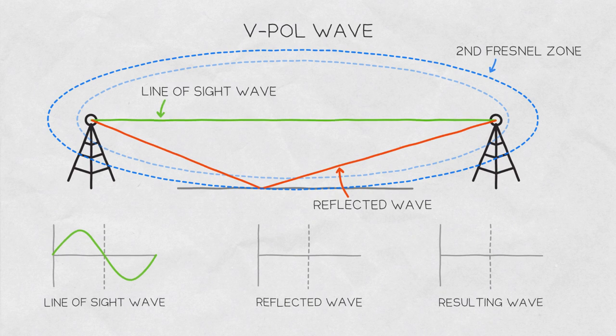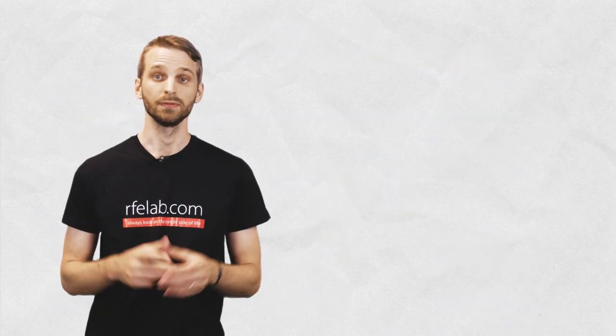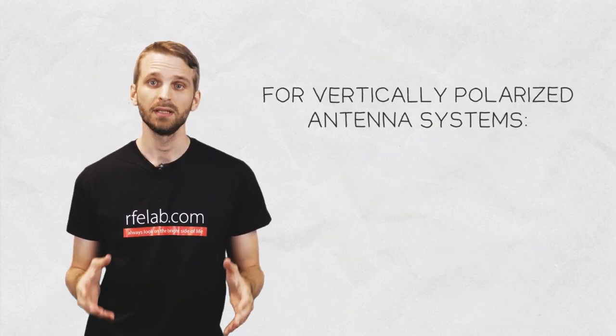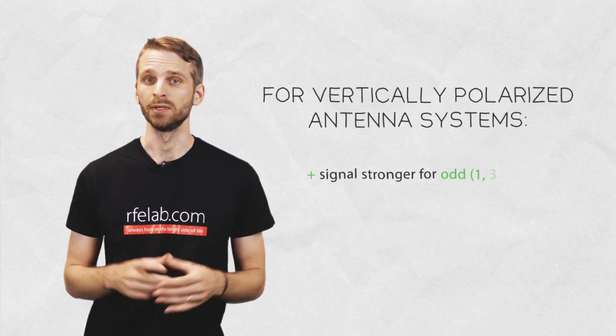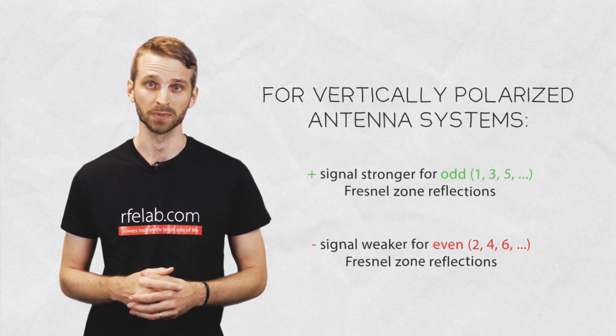When the wave reflects from the second Fresnel zone border, the situation is quite the opposite. The total received signal is weakened. So for vertically polarized antenna systems, the resulting signal is stronger when the wave reflects from odd Fresnel zones and weaker when it reflects from even Fresnel zones.